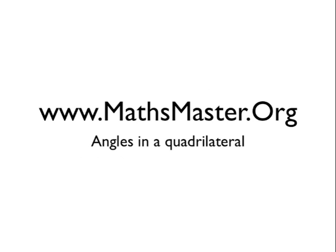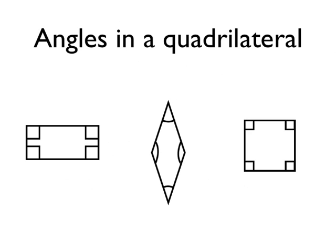Welcome to MathsMaster.org. Let's learn about angles in a quadrilateral. Quadrilaterals are four-sided shapes made up from straight sides, and the angle rule that we're about to learn actually applies to all quadrilaterals.